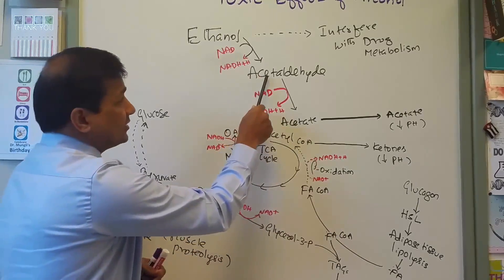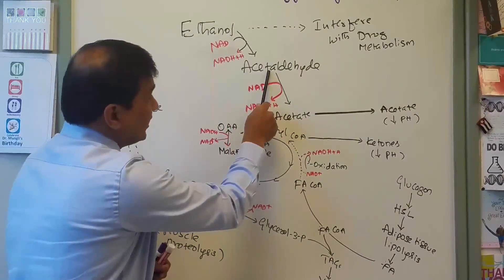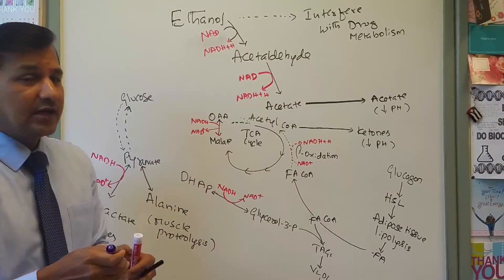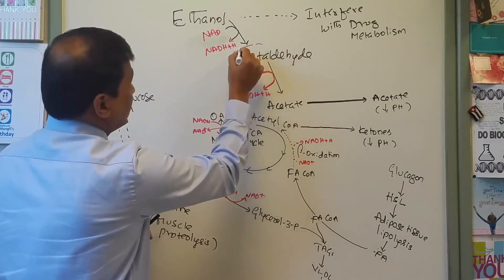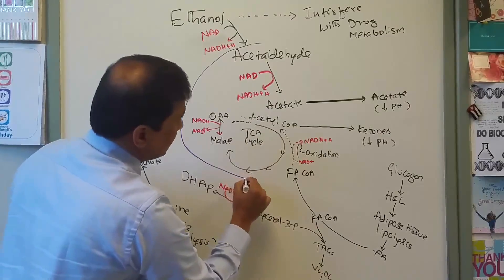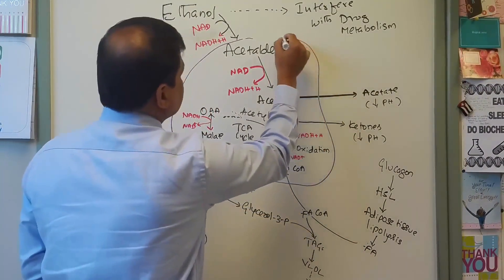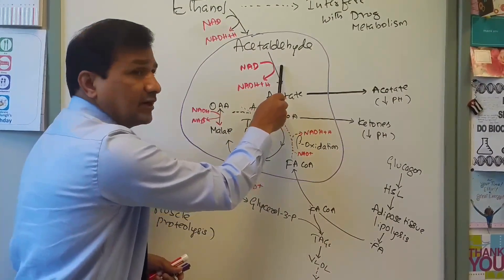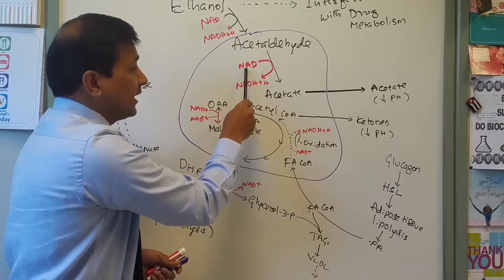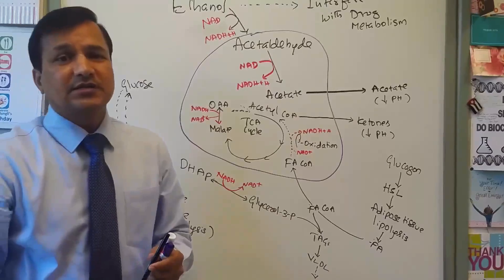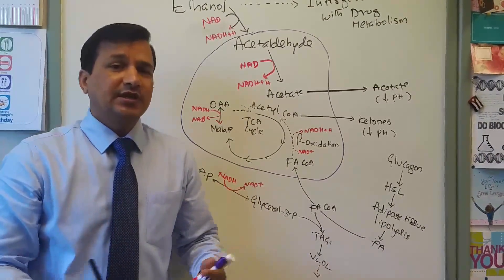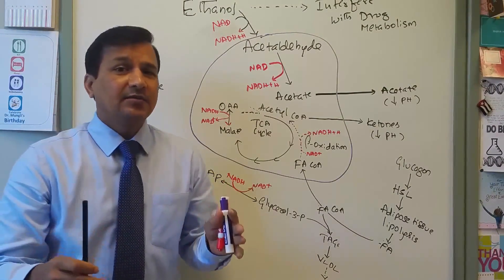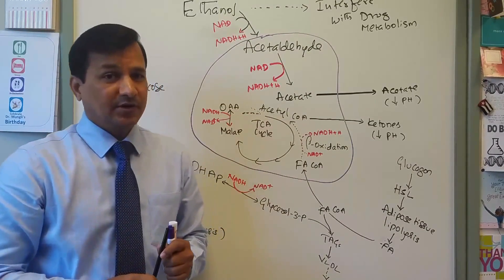Acetaldehyde moves into the mitochondrial matrix, where it is converted to acetate by acetaldehyde dehydrogenase enzyme. This reaction again consumes NAD+ and releases NADH+H+. So there will be plenty of NADH+H+ in the mitochondrial matrix as well when alcohol undergoes metabolism.